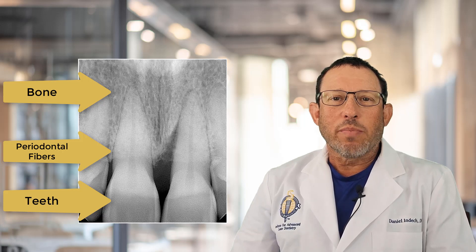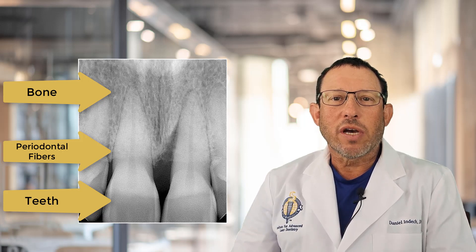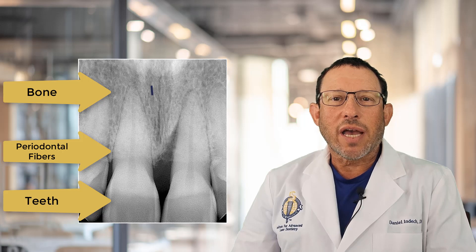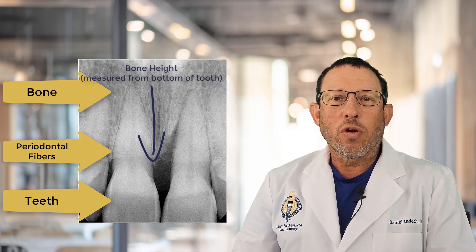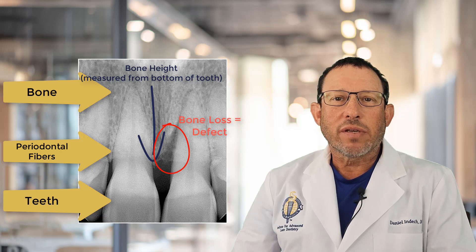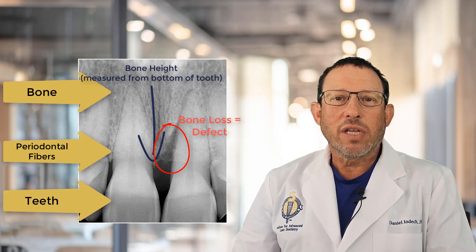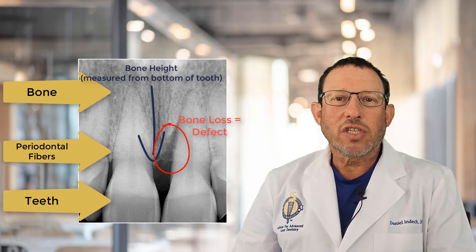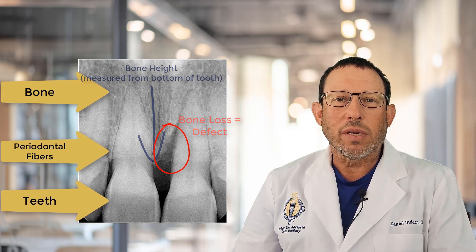Of particular importance when we're assessing for gum disease, for periodontal disease, is the height of the bone or the loss of bone that creates these defects around the teeth. When there are deep defects, those areas attract our attention because these are the sites that require treatment.